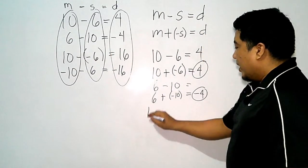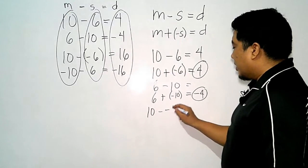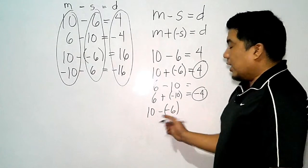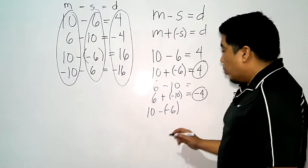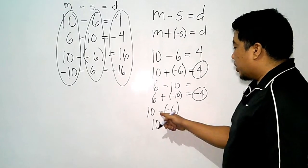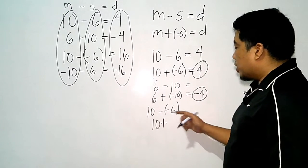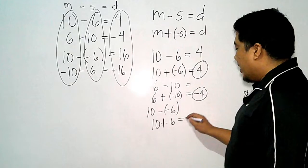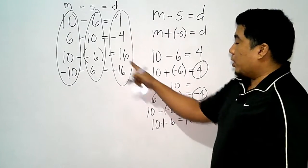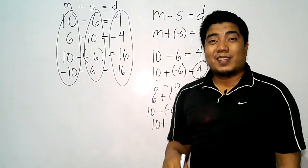Let's consider this one. 10 minus negative 6. If we have this kind of problem, what we will do is, we change the minus to plus, we change the subtrahend into positive 6, and that gives us positive 16, which is just the same.